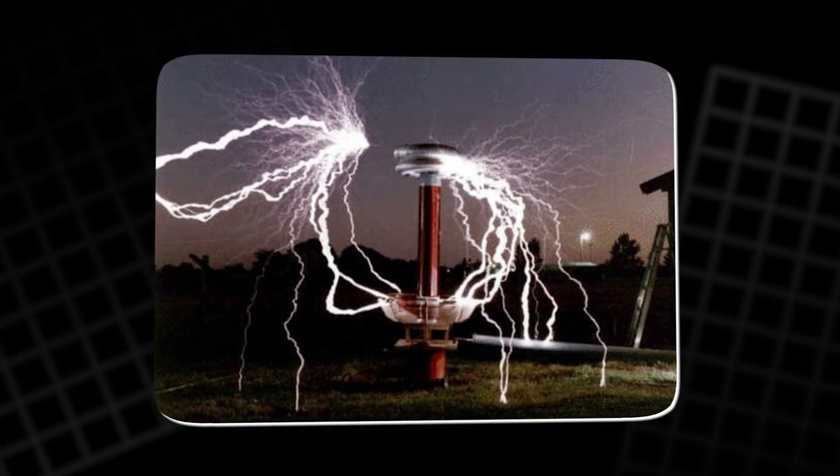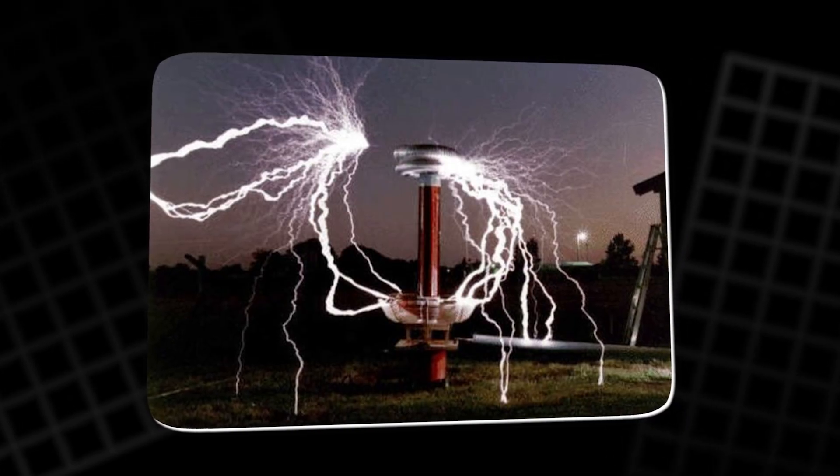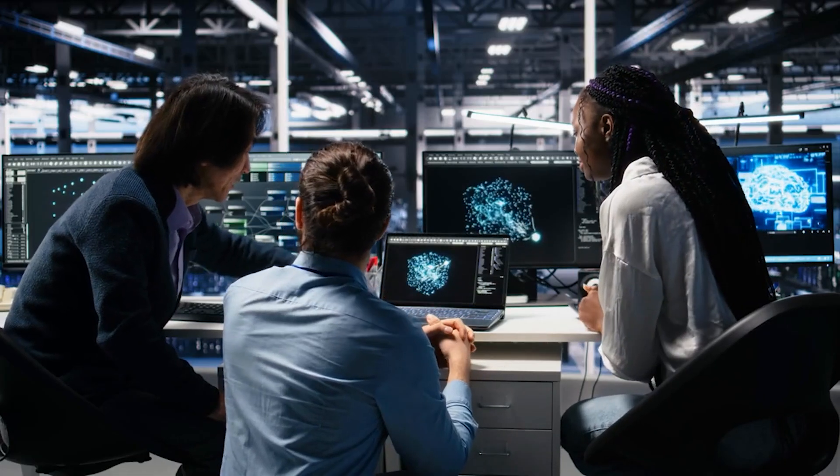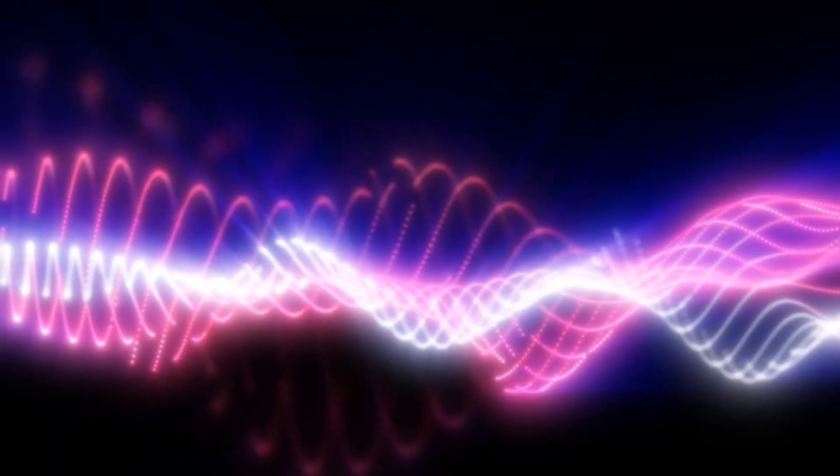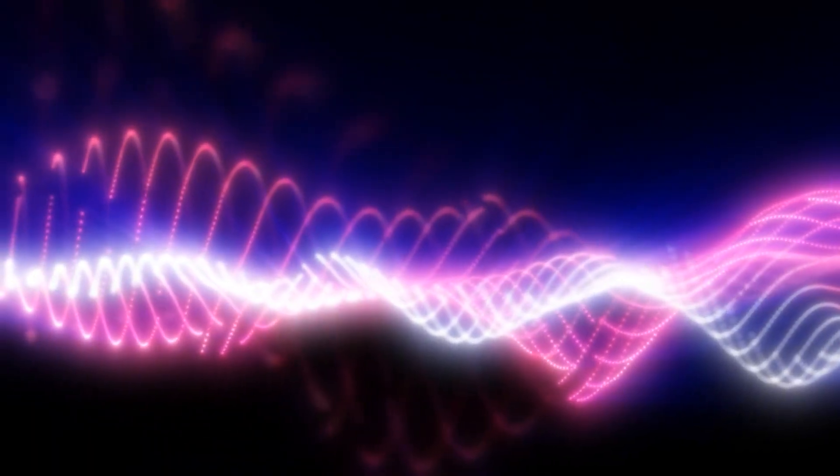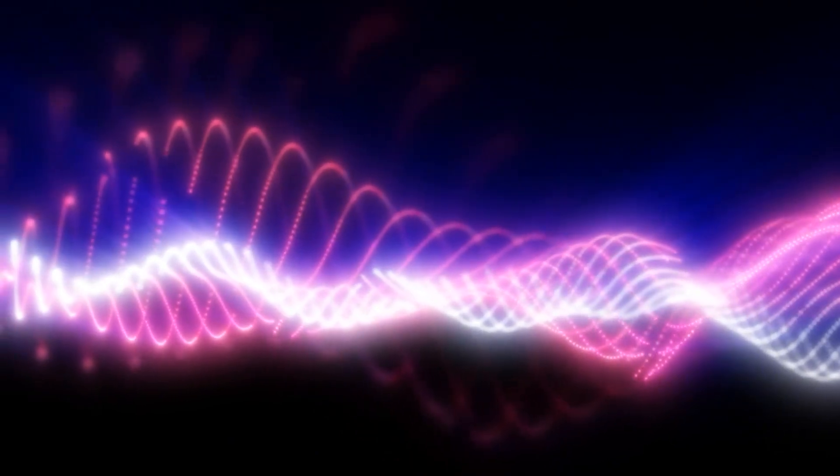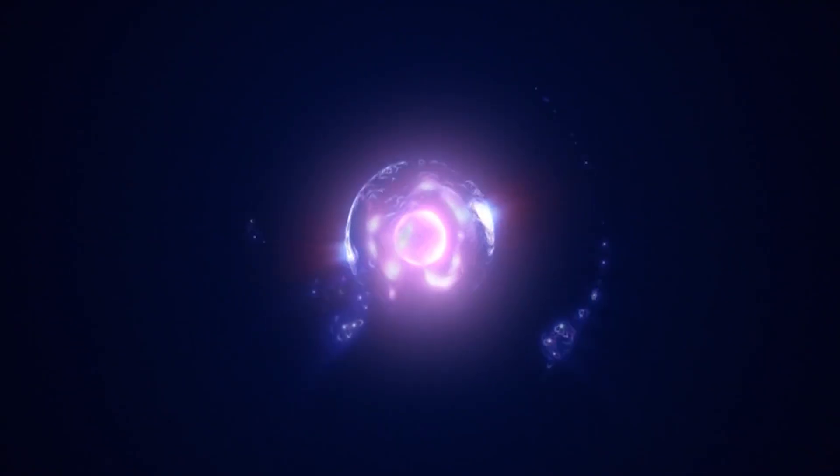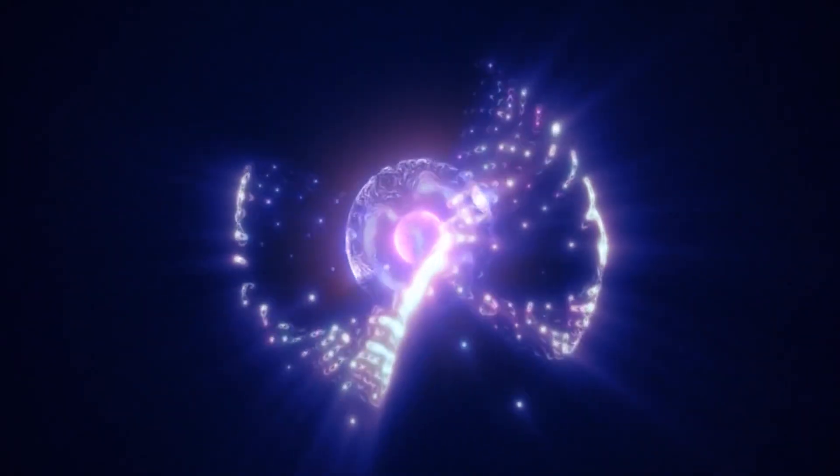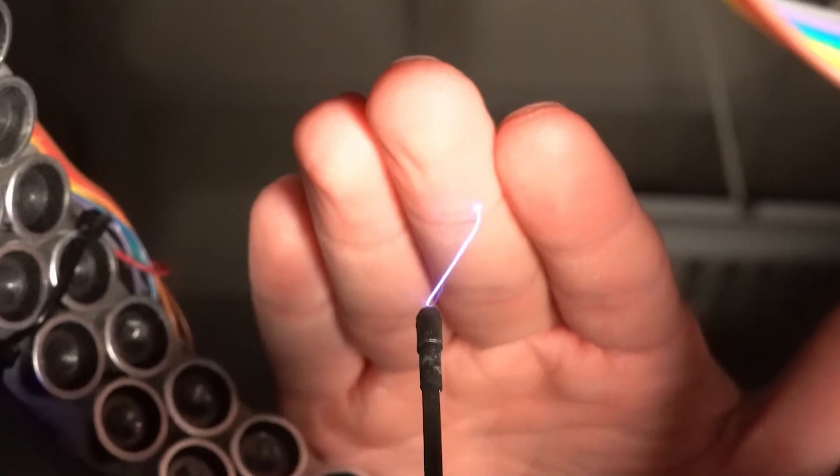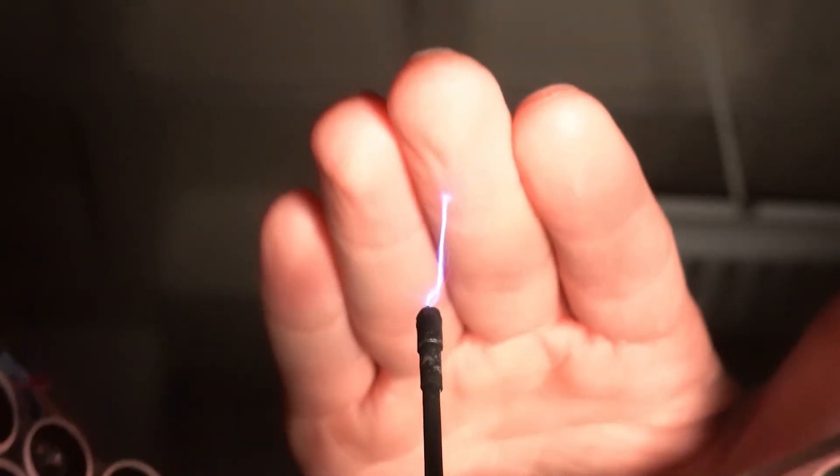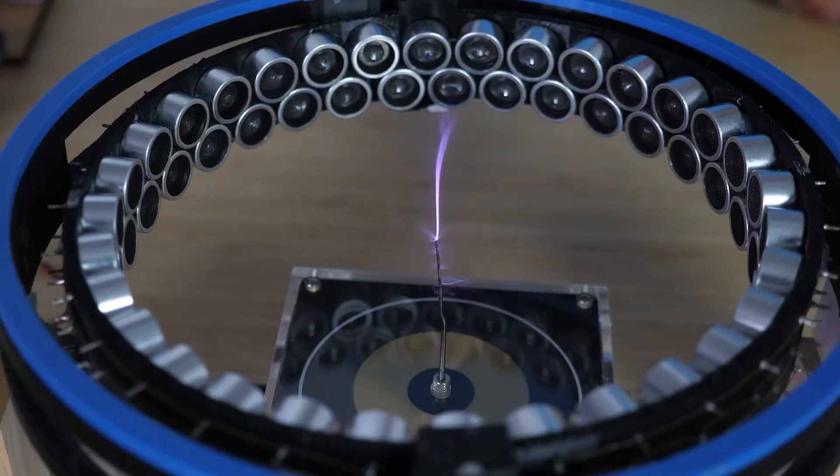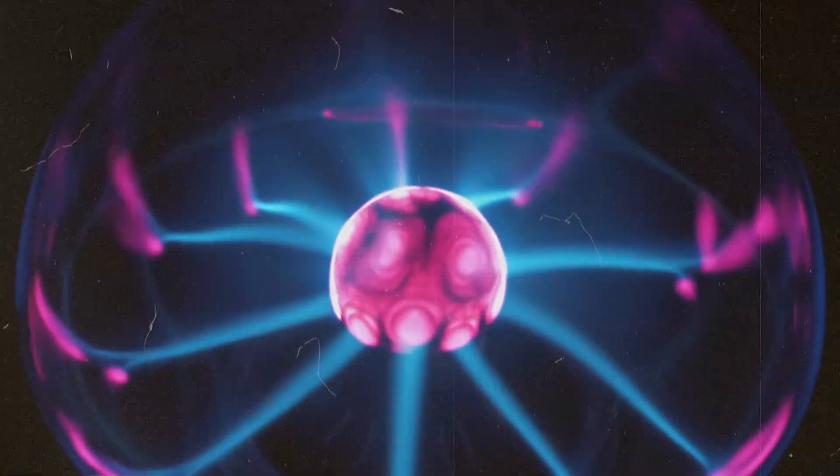By pulsing a Tesla coil thousands of times per second, scientists can repeatedly generate sparks that heat the air. These pulses build up a warm, low-density channel right through the antinode formed by the ultrasonic waves. Each new spark follows this hot path, creating a continuous guided plasma beam. What was once a random series of flashes now becomes a single straight line, glowing bright and controlled.